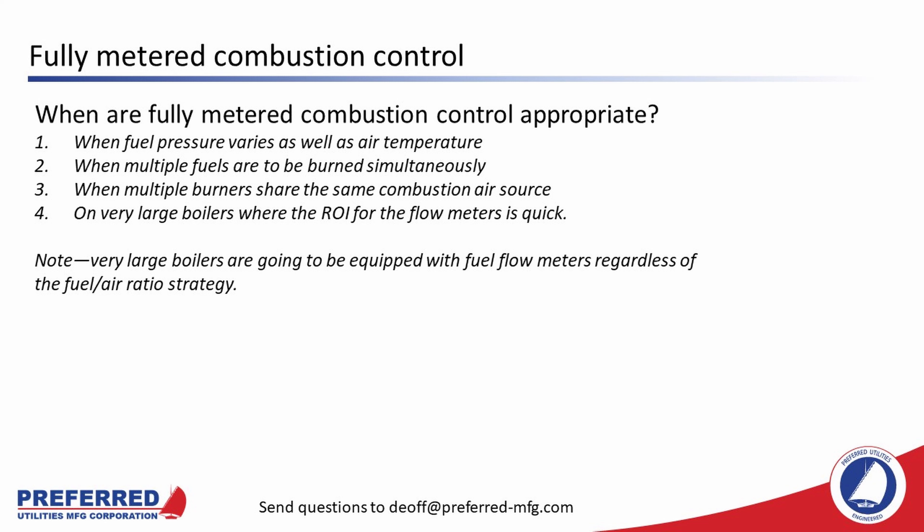Simultaneous fuel burning is really the only way to do it safely, and we see it in larger boilers. When multiple burners share the same combustion air source — as with utility boilers that might have 36 burners but just one combustion air fan — the fuel to the burners is measured at one flow meter at the header and the air is measured through the combustion air fan. Fully metered controls may also be appropriate on very large boilers where the ROI for the flow meters is quick, and note that very large boilers will have fuel flow meters regardless, so sometimes there's no extra expense doing fully metered controls versus parallel positioning with O2 trim.